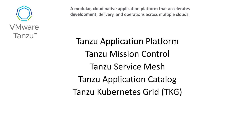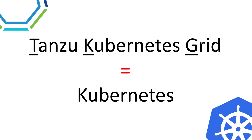If you just wanted to know what Tanzu was in one or two brief sentences, you can probably stop the video here. But if you're still here, let's briefly explain what TKG is. Tanzu Kubernetes Grid, or TKG, does equate to Kubernetes — it's VMware's distribution of Kubernetes. Using Linux as an example, we have Red Hat, Ubuntu, CentOS, Rocky — they're all just different distributions of Linux packaged a little differently. That's what TKG is: a distribution of Kubernetes that VMware has packaged a certain way and certified to work together.